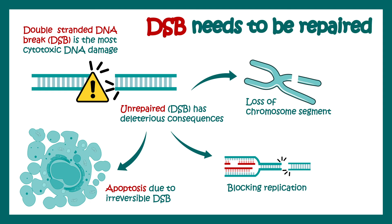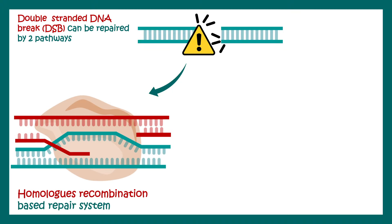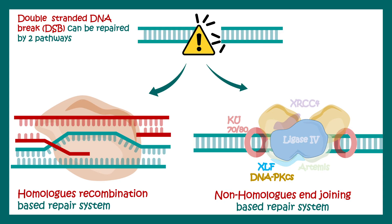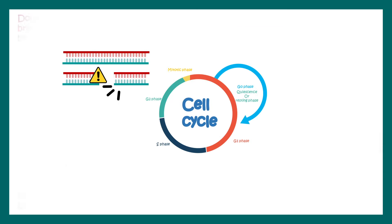So the moral of the story is: DSB, or double-stranded DNA break, needs to be repaired. But the question is how. There are two ways by which double-stranded DNA breaks can be fixed — one is a homology-based repair system and another is non-homologous end joining. In this video we are going to focus on the non-homologous end joining based repair system.